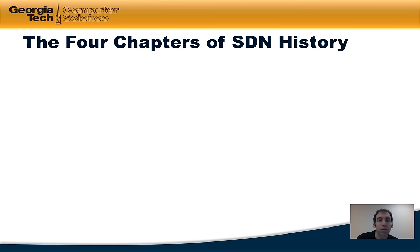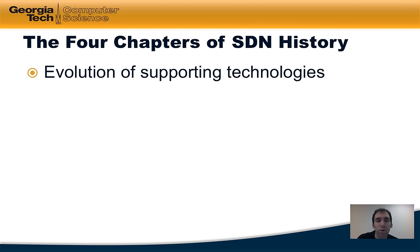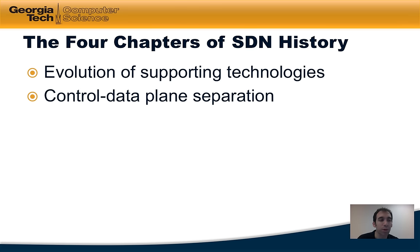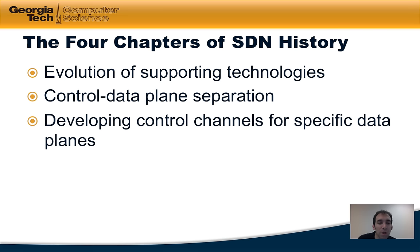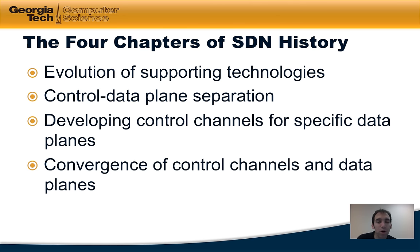There are four chapters in SDN history we'll discuss throughout this module. The first is the evolution of supporting technologies — in particular, how programmable data planes and control/data plane separation took shape. We'll also discuss specific control channels, like routing information communication between independently operated networks, and how after the proliferation of different control channels and data planes, there's been some convergence — for example, the emerging OpenFlow standard.